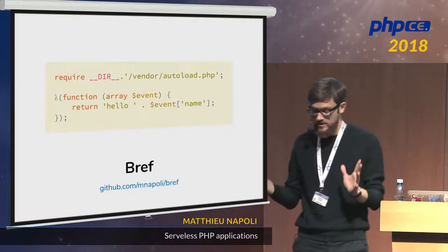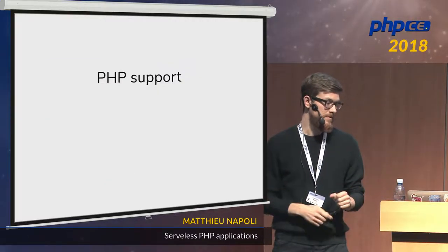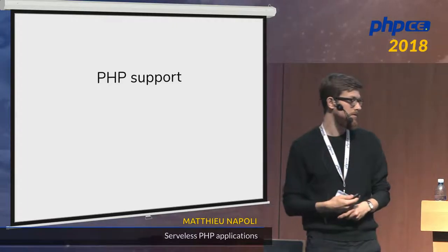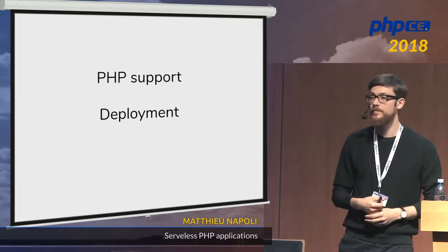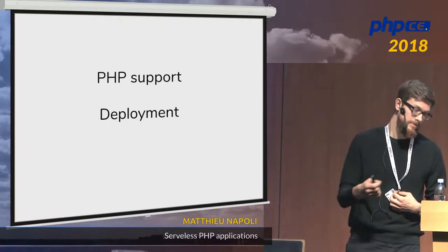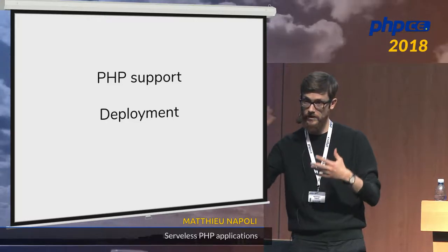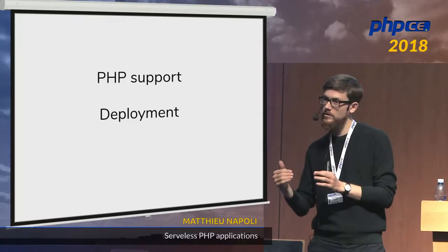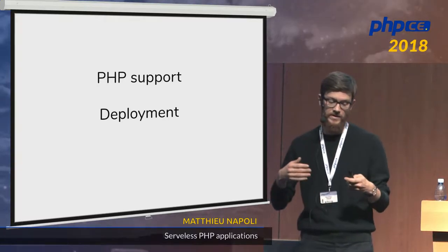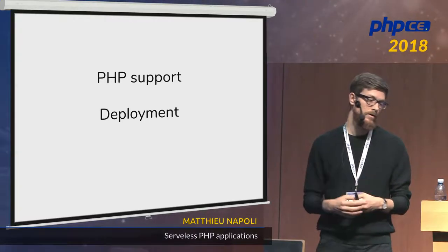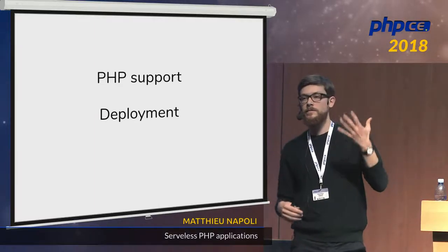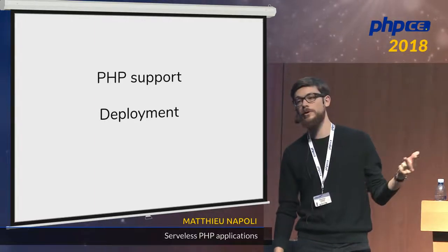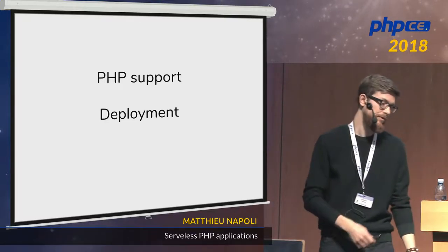BREF has three goals. The first is PHP support — though maybe eventually it will land in Amazon Lambda natively. The second goal is deployment — because the zip file approach is really not good. You just run bref deploy and it's online. BREF internally uses a tool called the serverless framework — not official, but works really fine with a big community. It adds on top of that: choosing your PHP version, installing extensions, configuring php.ini, installing Composer dependencies — the classic stuff when deploying PHP.